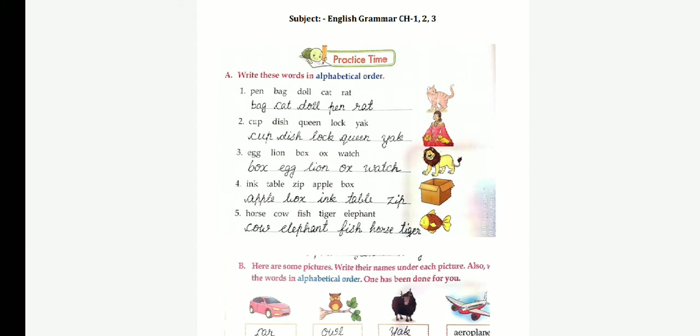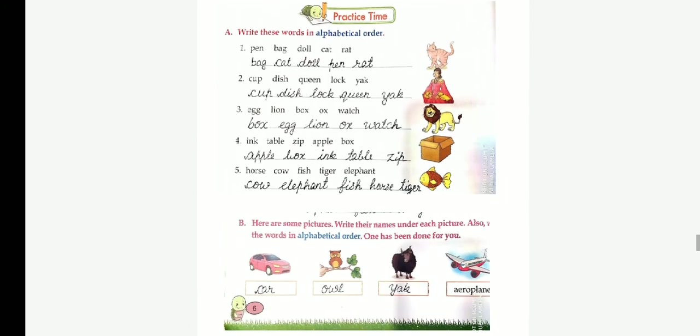Which word will come first? Apple. First letter, A, no? So, apple, box, ink, table and sip. Last one, horse, cow, fish, tiger, elephant. Answer: Cow, elephant, fish, horse and tiger.